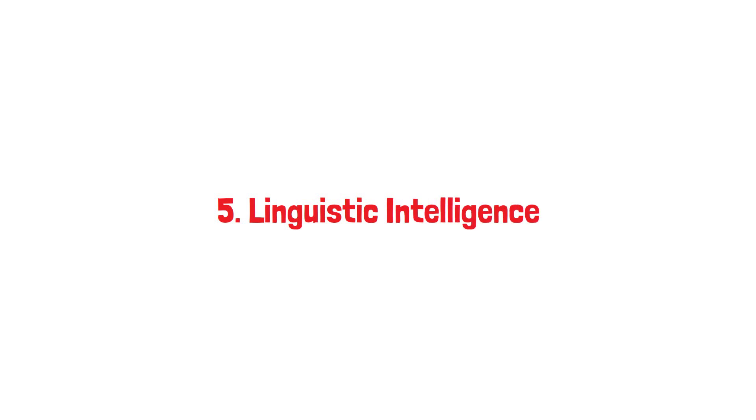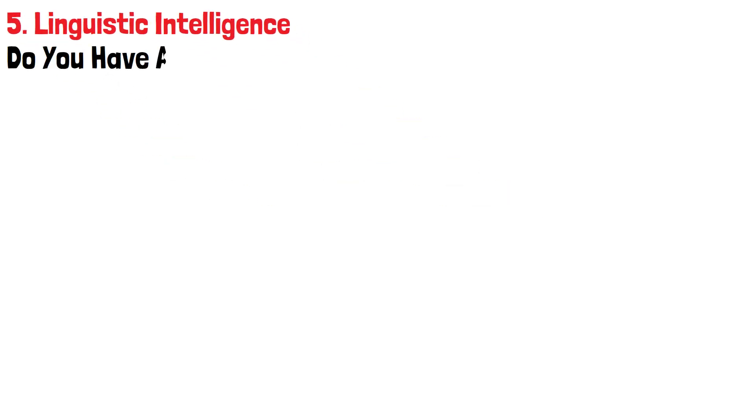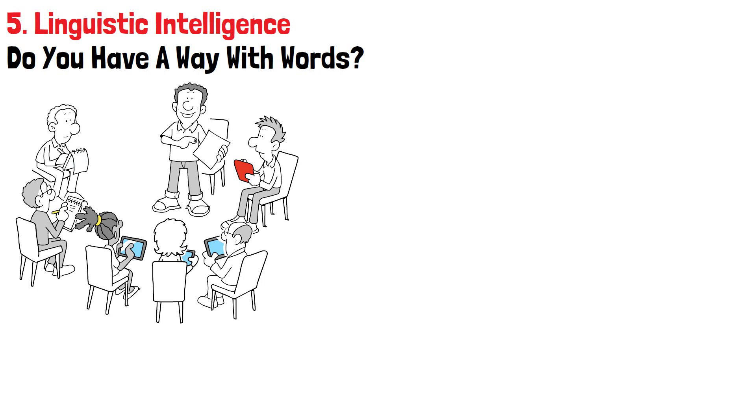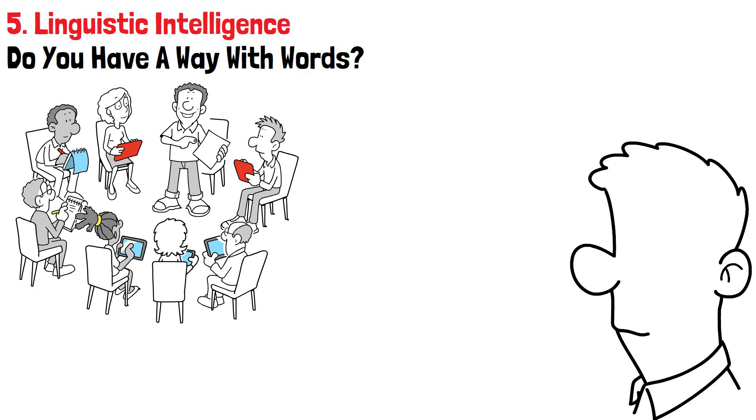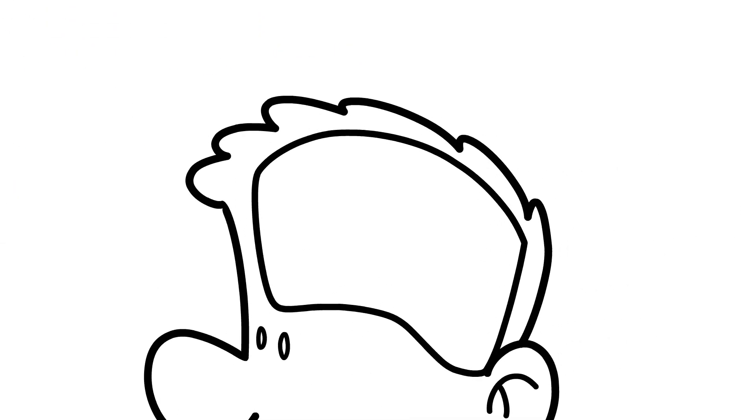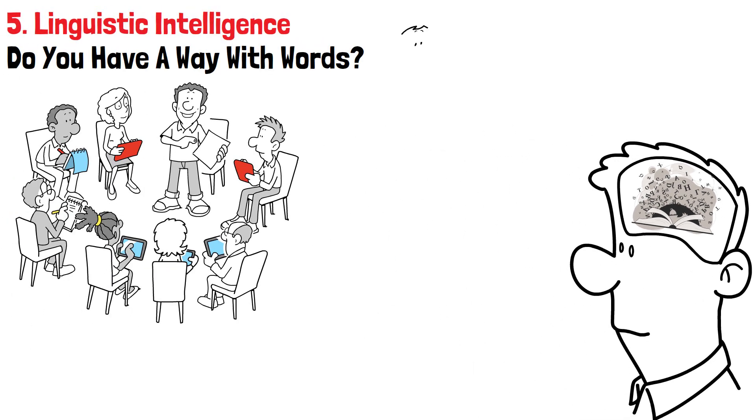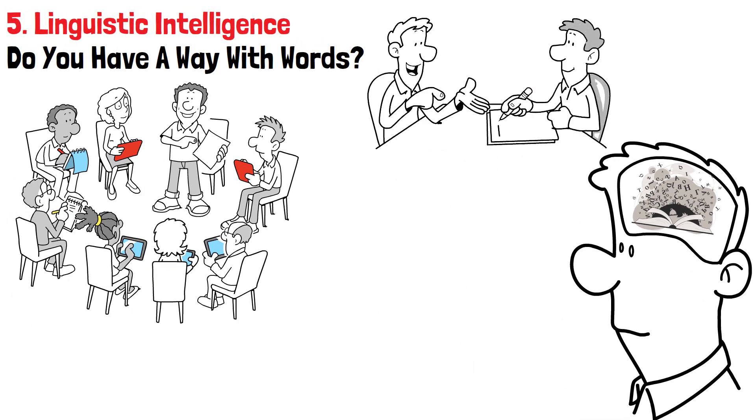Number five, linguistic intelligence. Do you have a way with words? If language lights up your mind, you likely have strong linguistic intelligence. Your vocabulary is rich, your grammar intuitive. Articulating your thoughts comes easily to you. You construct well-formed sentences, deconstruct arguments with verbal reasoning, and persuade others through rhetorical skill. You have an innate gift for self-expression through the precision and creativity of language.